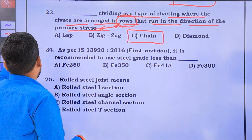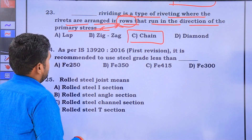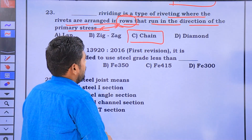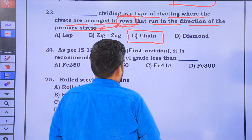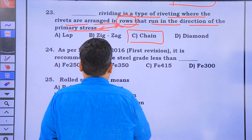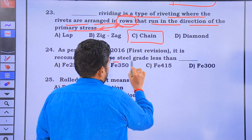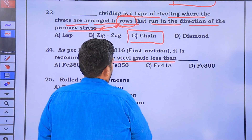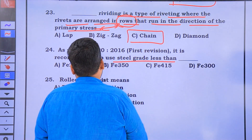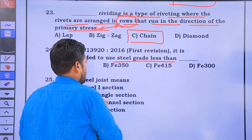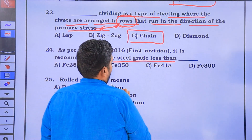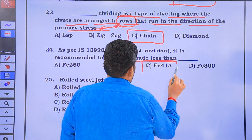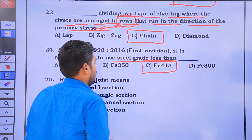As per IS 13920, the first revision recommends using steel grade Fe415 or less.